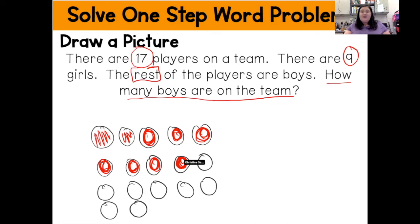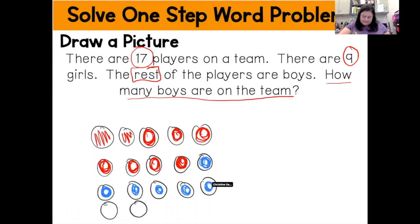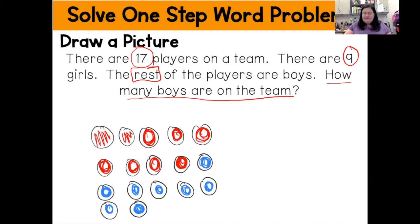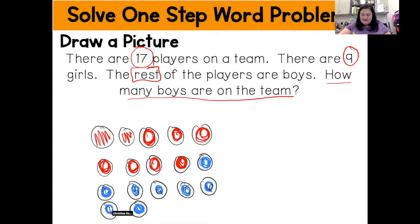It says that the rest of the players are boys. So I'm going to take my blue pen and color in the rest of these circles blue. Now that I'm done drawing my picture, I'm going to count up the blue circles that I have. So I have one, two, three, four, five, six, seven, eight.